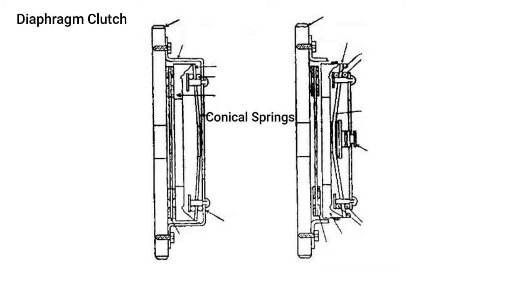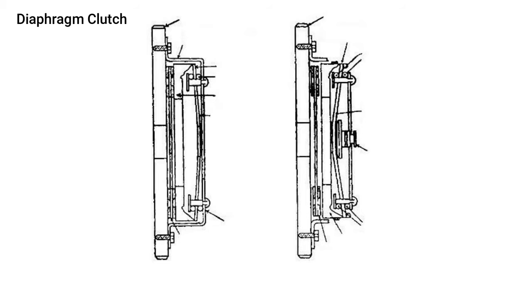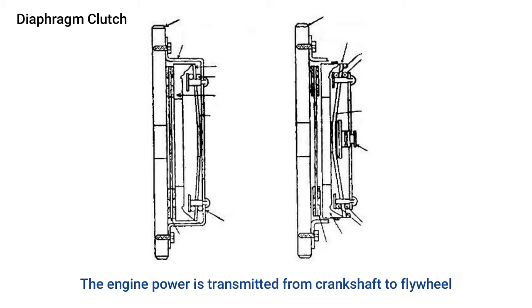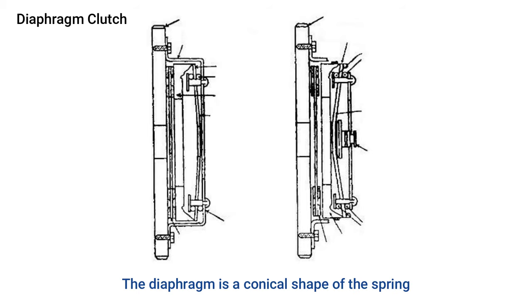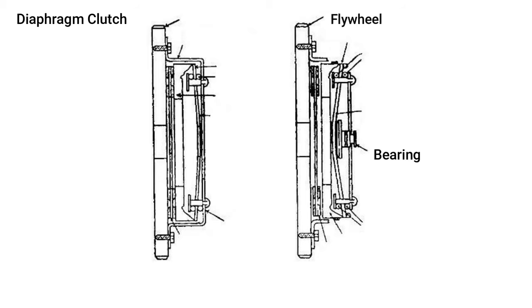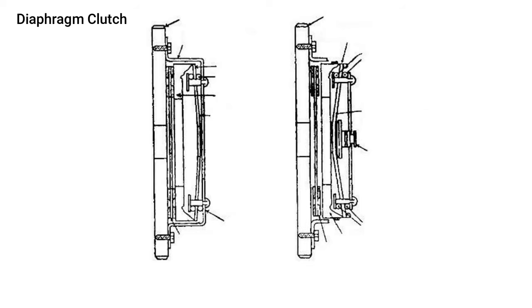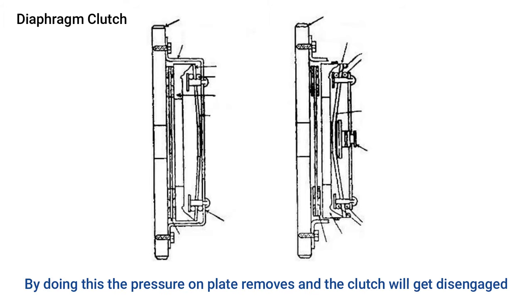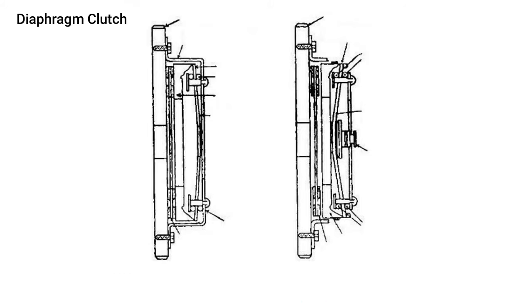The diaphragm clutch consists of a diaphragm or conical spring that produces pressure on the pressure plate for engaging the clutch. The spring may be finger or crown type, attached to the pressure plate. Engine power is transmitted from the crankshaft to the flywheel, which has friction lining connected to the clutch. When the clutch pedal is pressed, the outer bearing moves toward the flywheel, pressing the diaphragm spring, which pushes the pressure plate backward, disengaging the clutch. Releasing the clutch pedal returns the pressure plate and diaphragm spring to their normal position, re-engaging the clutch.